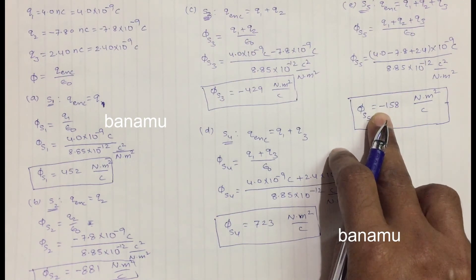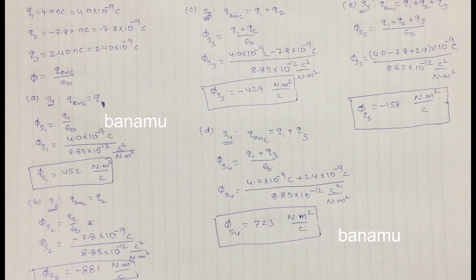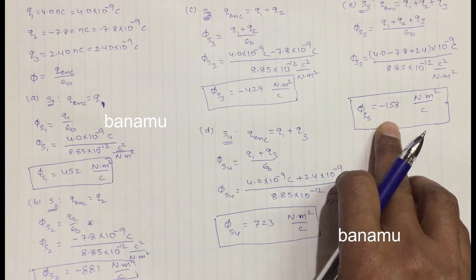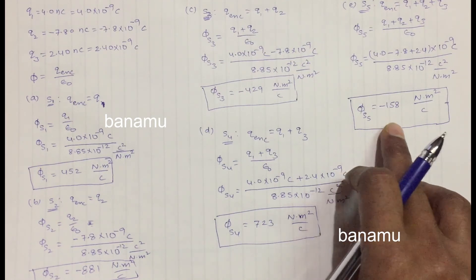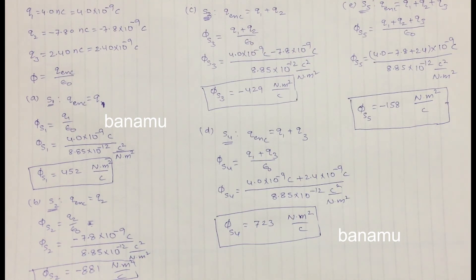Part F: A negative flux indicates that the net flux is directed into the surface, while a positive flux indicates net flux directed out of the surface. All that matters for Gauss's Law is the total amount of charge enclosed by the surface, not how that charge is distributed within the enclosed space.